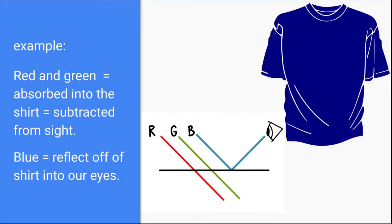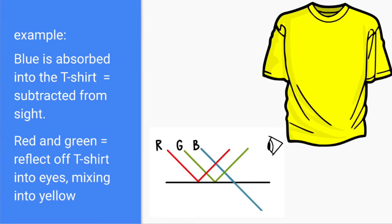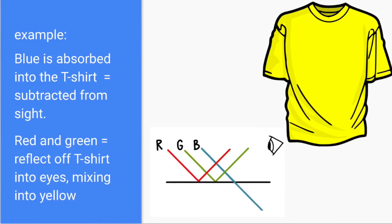An example would be a blue t-shirt. You see that it's blue because red and green are being absorbed into the shirt — subtracted from your sight — and the blue is being reflected off of the shirt into your eyesight. Another example is a yellow t-shirt. It's yellow because the blue is being absorbed into the t-shirt and subtracted from your sight, and the red and green are both reflecting off the t-shirt, mixing into yellow as it enters your eyesight.